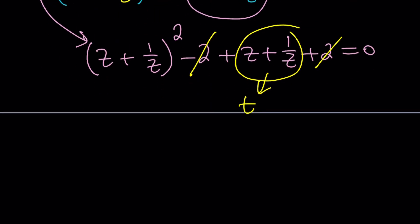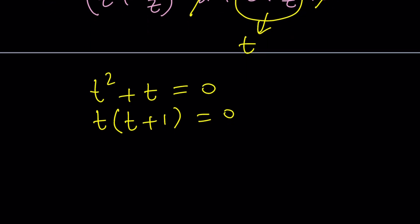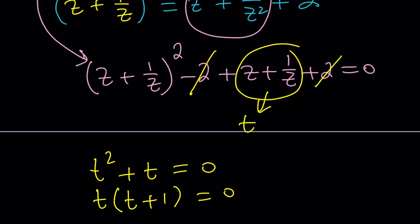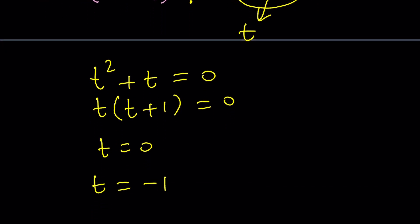And now this is t^2 + t = 0. Oh man, this is such an easy equation to solve, right? Too good to be true. Take out a t, and now you've got t = 0 and t = -1. But what is t? z + 1/z. Do you remember that? In a recent video, we talked about z - 1/z, but this is z + 1/z. Similar.